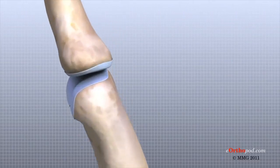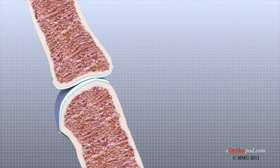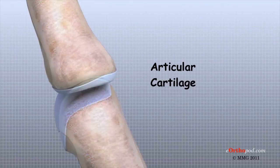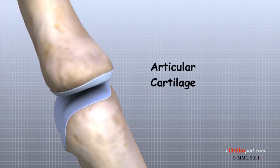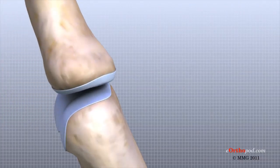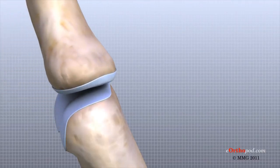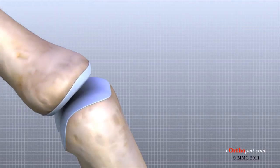The joints of the hand, fingers, and thumb are covered on the ends with articular cartilage. This white shiny material has a rubbery consistency. The function of articular cartilage is to absorb shock and provide an extremely smooth surface to facilitate motion. There is articular cartilage essentially everywhere that two bony surfaces move against one another, or articulate.